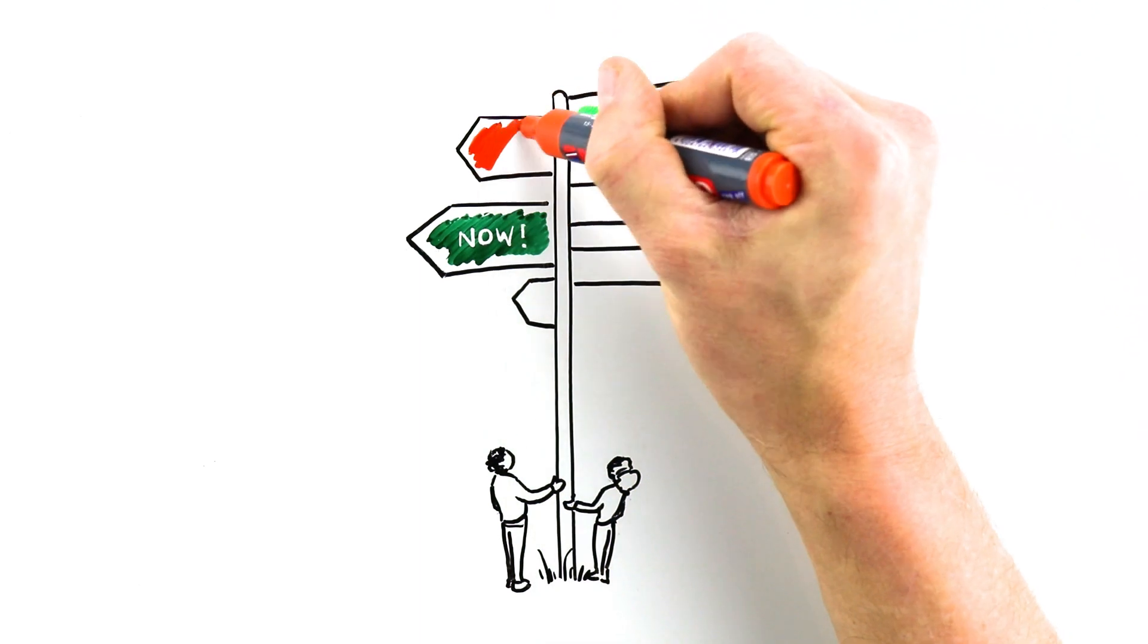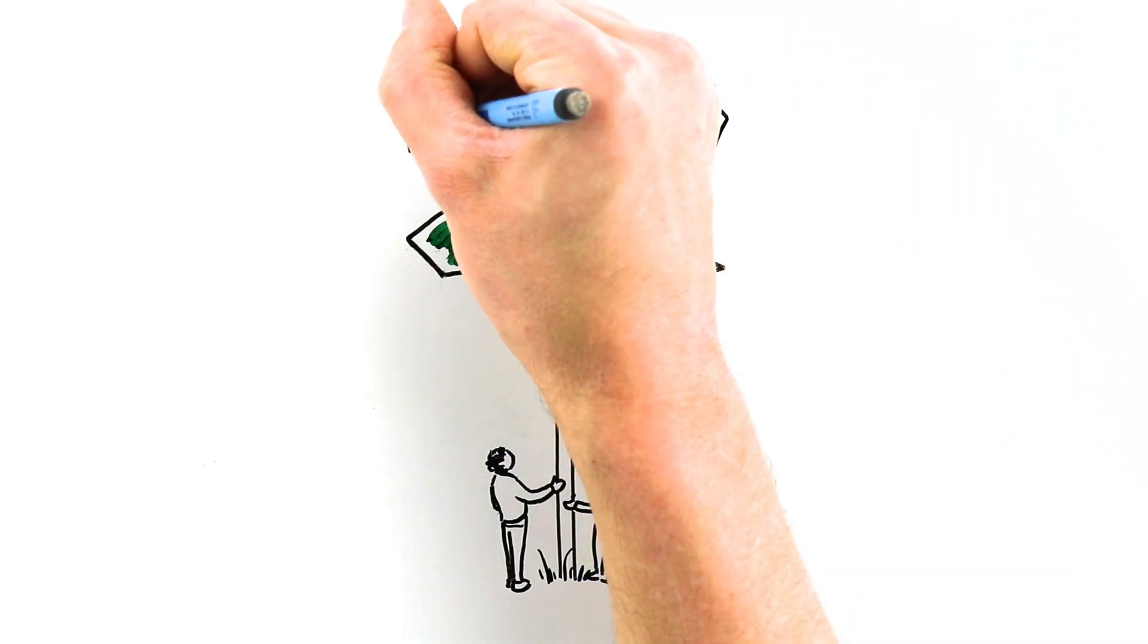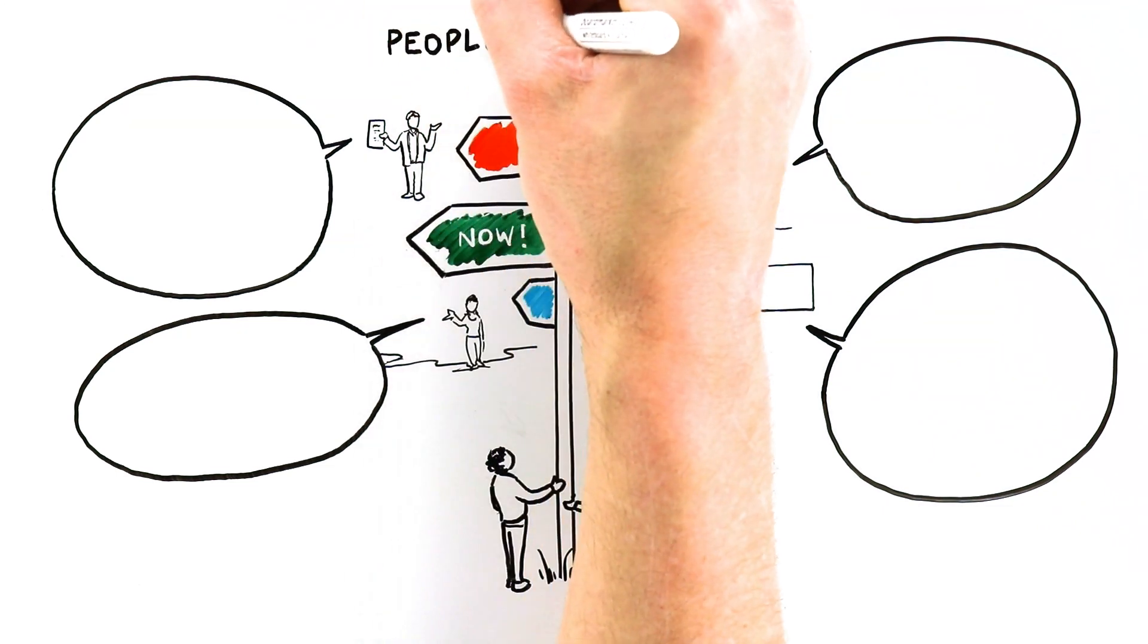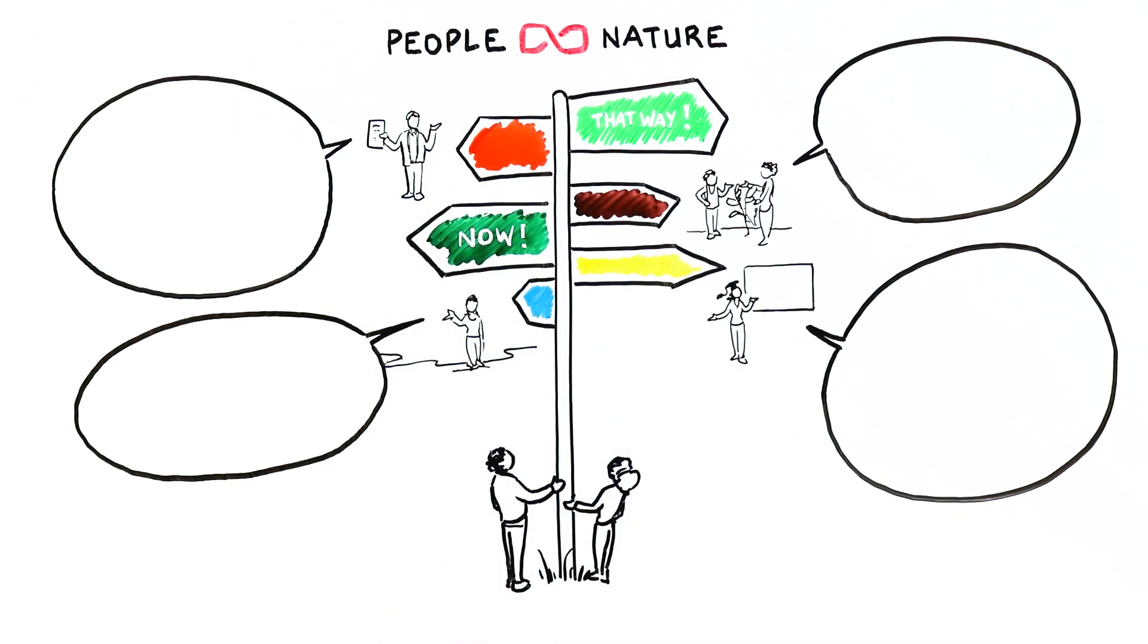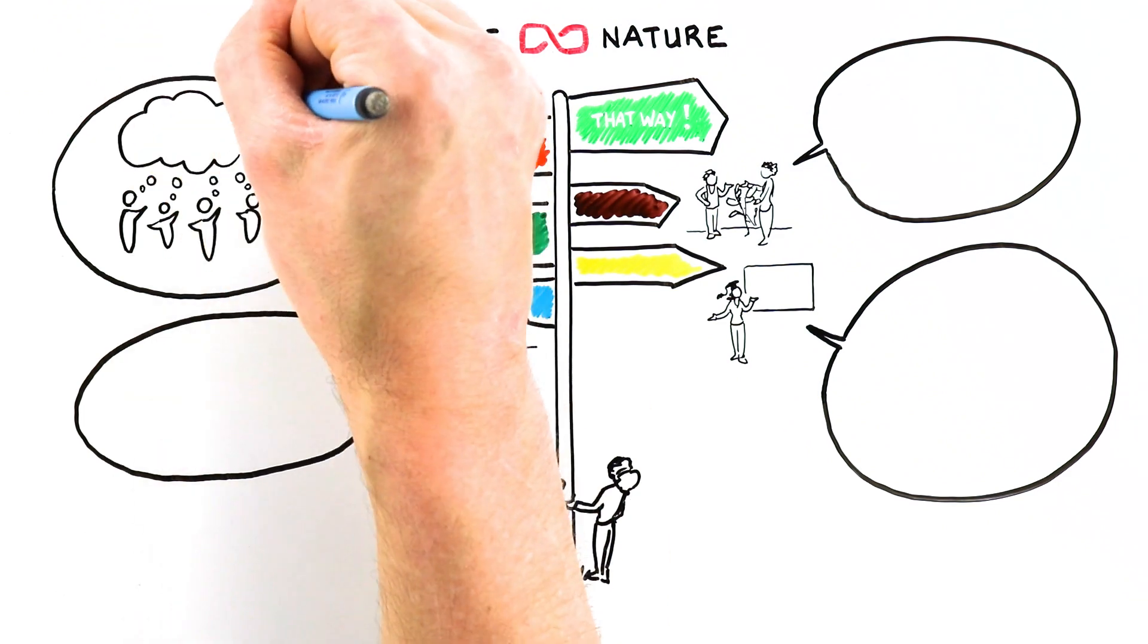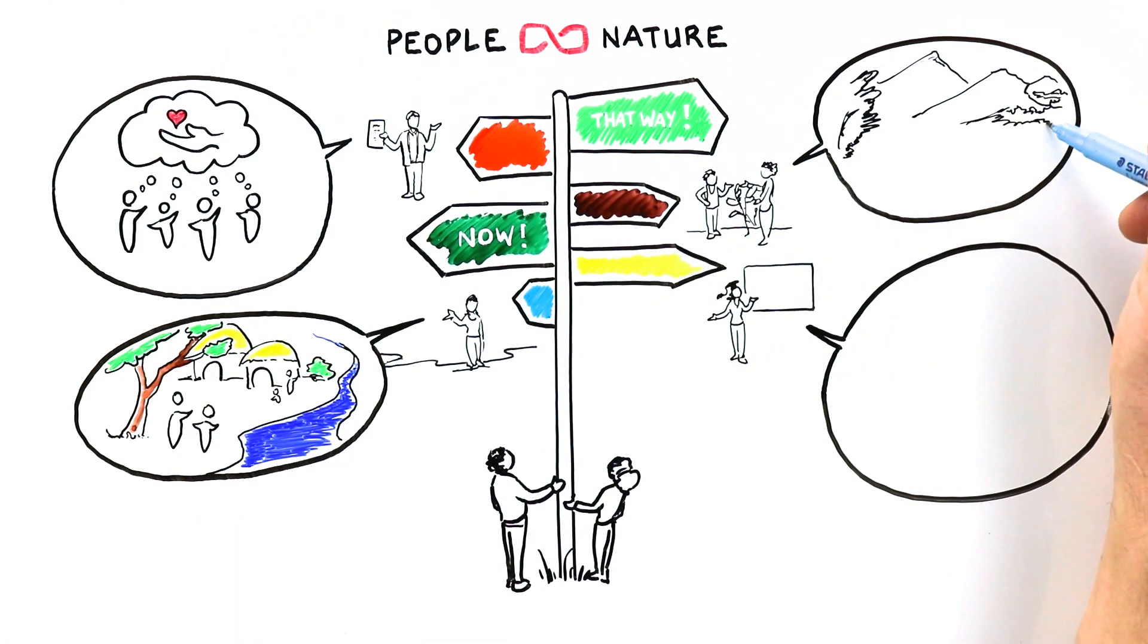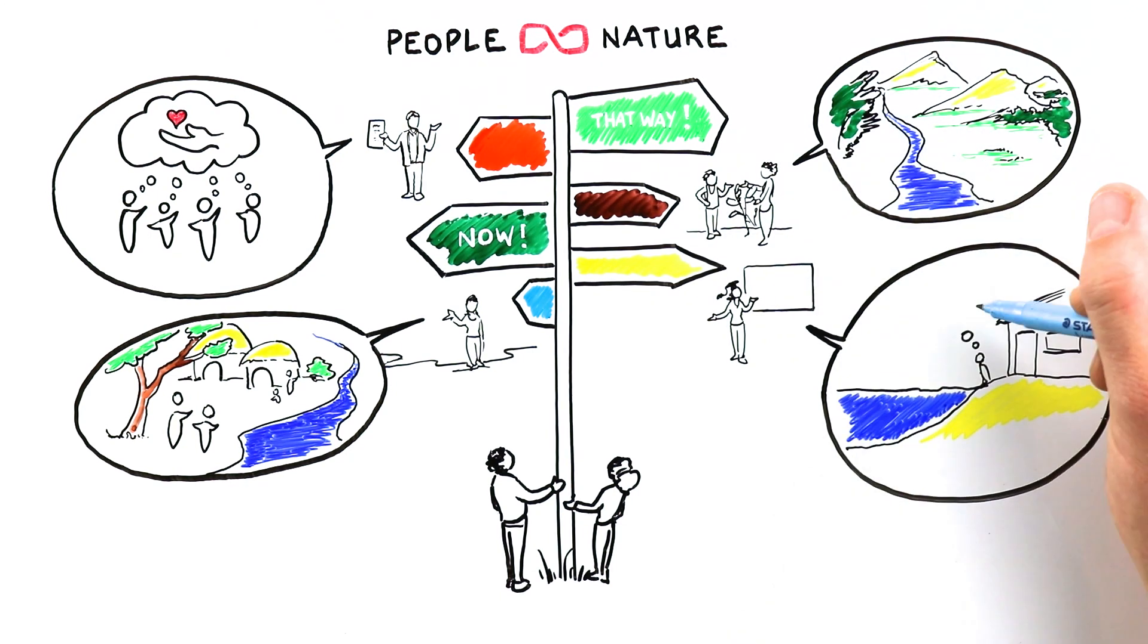But there are alternatives too. Pathways described by less powerful voices involving different relationships between people and nature. These pathways include people's values, their livelihoods, the landscapes where they live and the uncertainties they face.